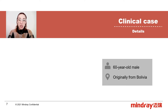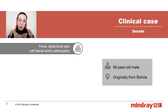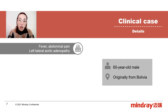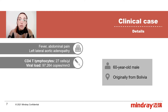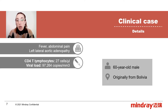This clinical case is from a 60-year-old male patient, originally from Bolivia, positive for HIV, who had restarted his antiretroviral therapy 11 days before hospital admission. He attended the medical emergency service due to abdominal pain and fever and it was decided to hospitalize him. On physical exam he presented a left lateral aortic adenopathy. His blood test showed a CD4 lymphocyte count of 27 cells per microliter and a viral load of 97,264 copies per cubic millimeter.